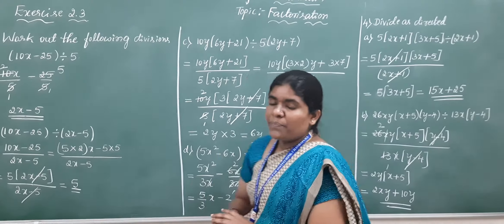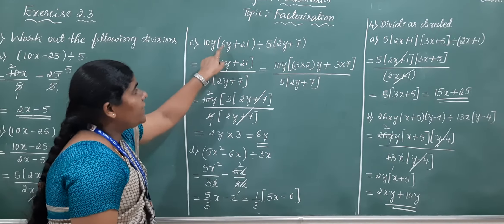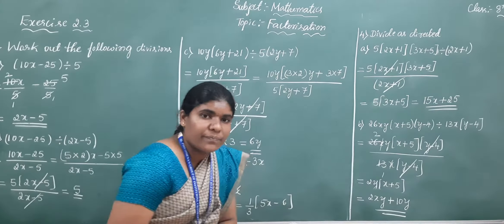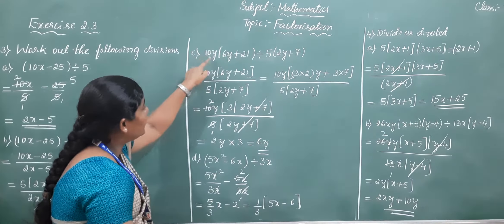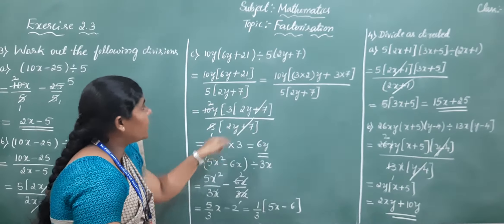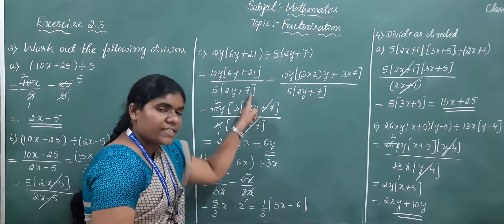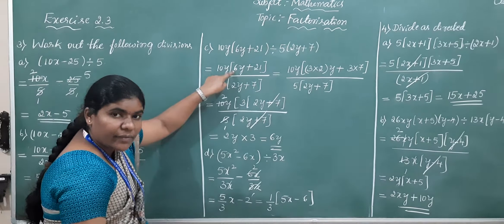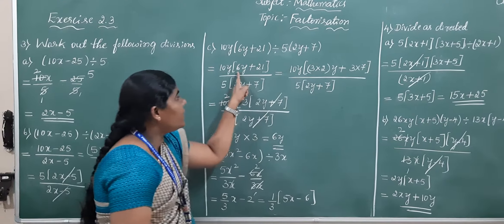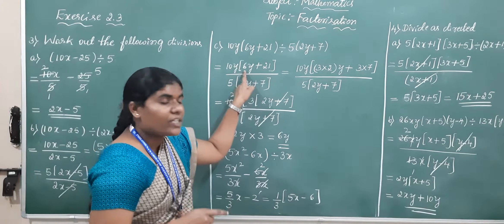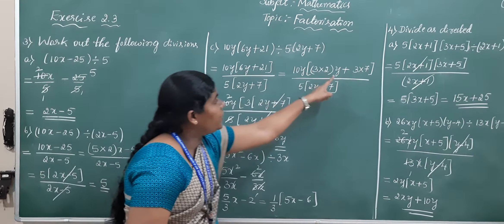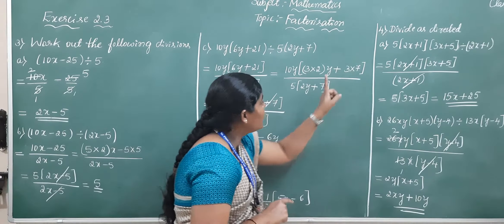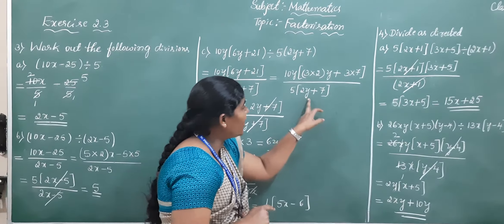Moving on to the next problem in question three: 10y into (6y plus 21) divided by 5 into (2y plus 7). Write this as is: 10y into (6y plus 21) divided by 5 into (2y plus 7). Now using the 3 times table — 3 twos are 6, and 3 sevens are 21 — so 6y plus 21 becomes 3 into (2y plus 7). This is divided by 5 into (2y plus 7).